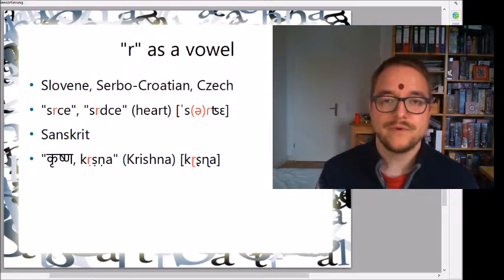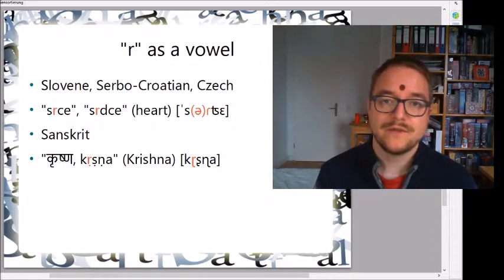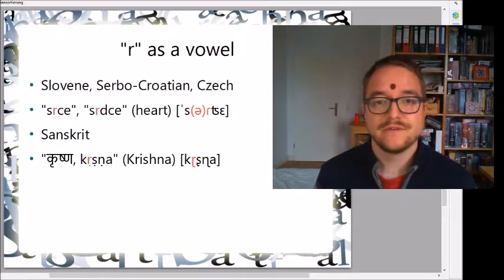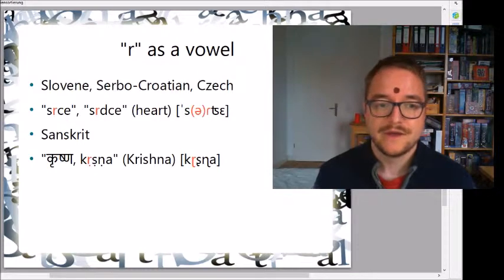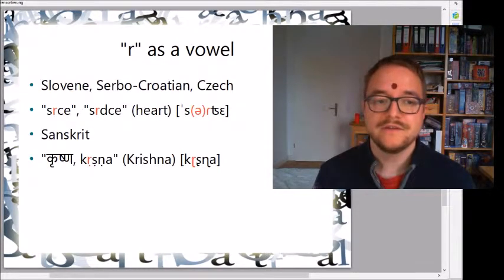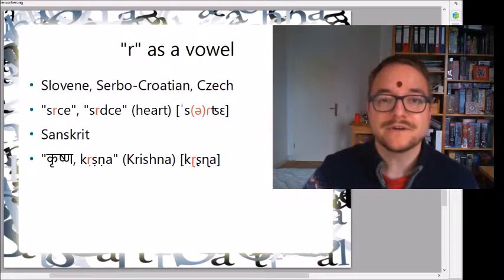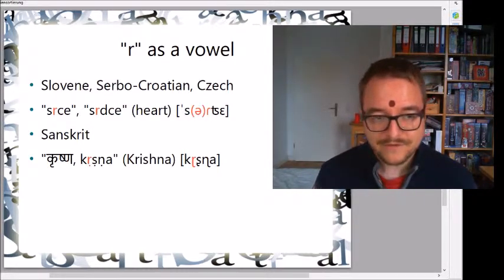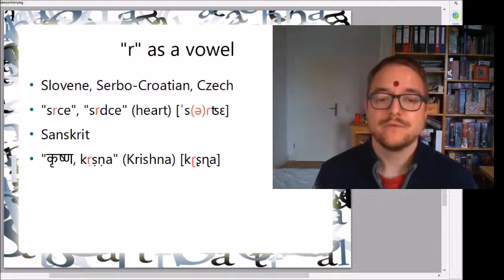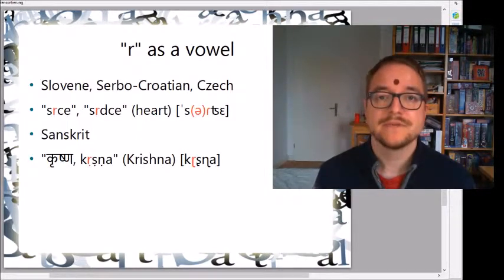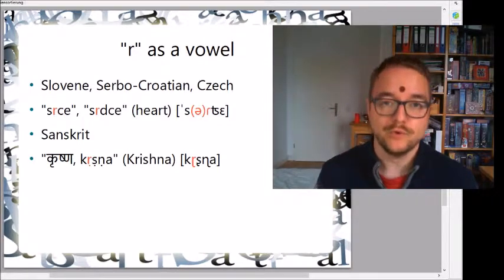There's another interesting phenomenon: in several languages, the R sound can be a vowel — the center of a syllable. For example, this happens in Slavic languages like Slovene, Serbian/Croatian, or Czech. In these languages the word for heart is 'srce' — you hear that the accent lies on an R. In Sanskrit, the old Indian language, there is a retroflex R sound that can be treated as a vowel, and it occurs in the speaker's own name — Krishna — where the vowel is R and it's the name of a god meaning 'blue' in Sanskrit.